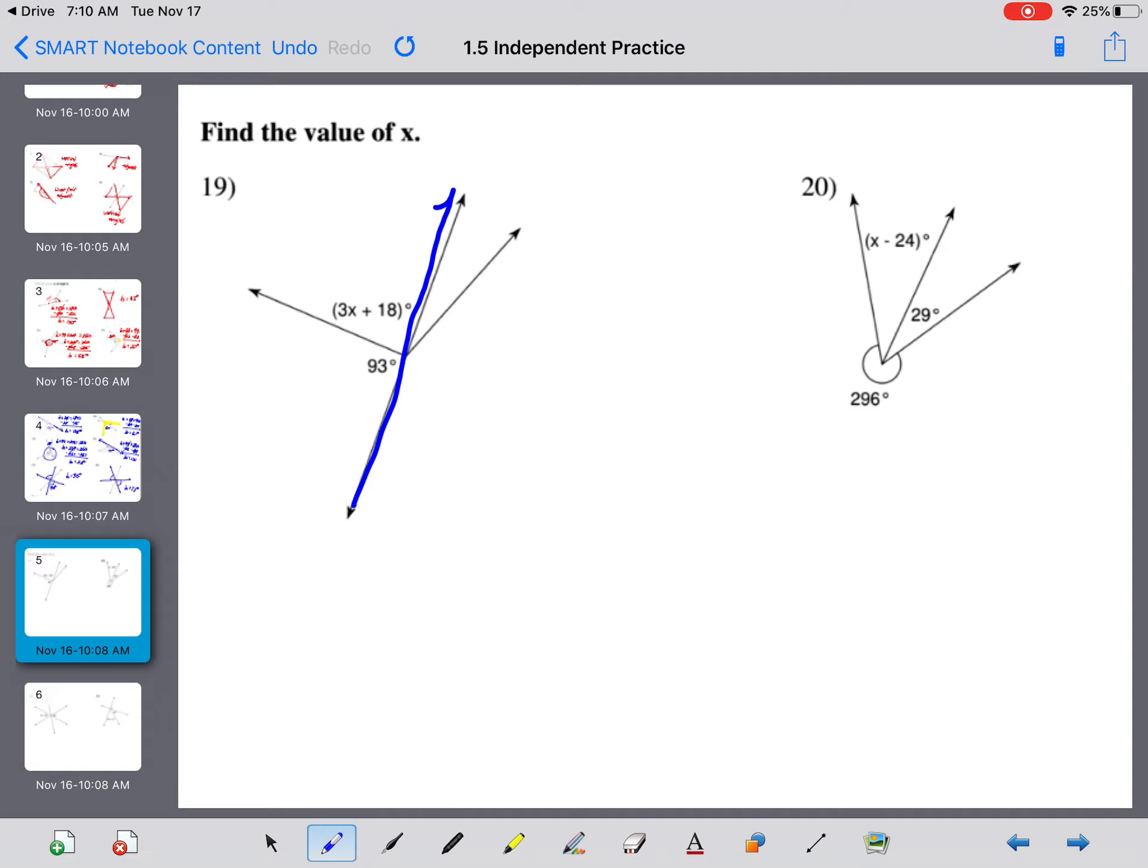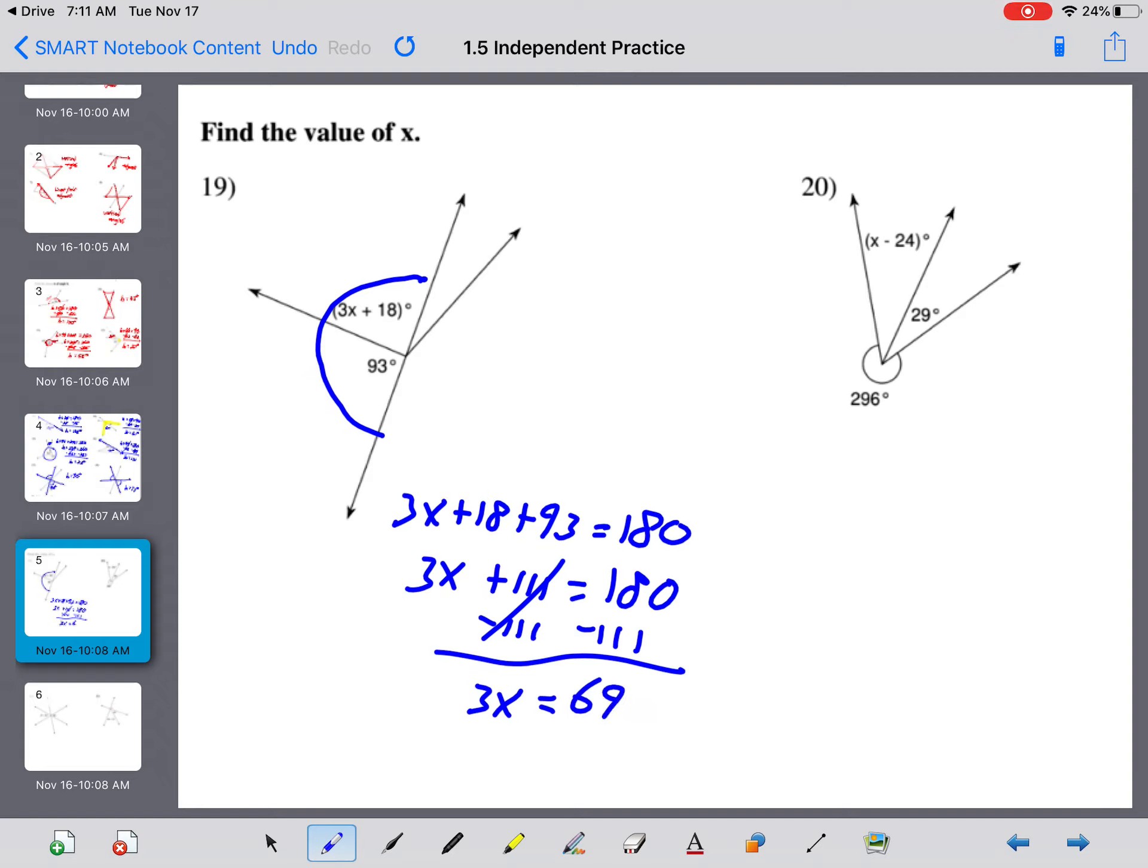If we take a look at 19, we have a linear pair because there's a straight line. So that means these two angles equal 180 degrees. 3x plus 18 plus 93 equal 180. So 3x plus 18 plus 93 makes 111, which equals 180. Subtract your 111 on both sides. And 3x equals 180 minus 111, which is 69. Divide both sides by 3. And x equals 23.